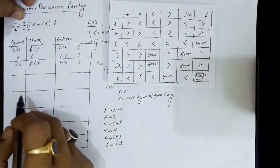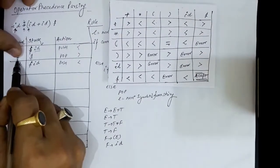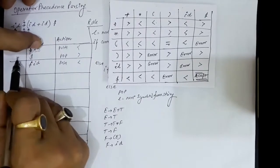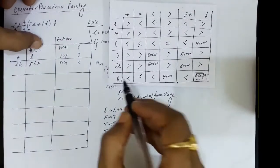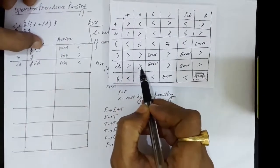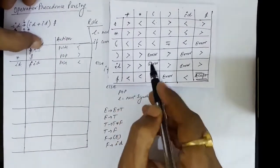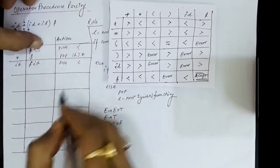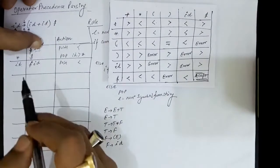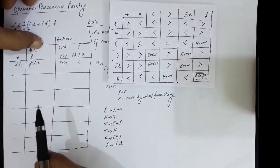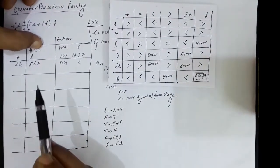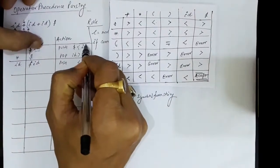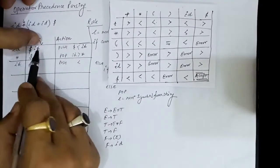Next we check the next symbol, which is the multiplication sign. We check the precedence of id over multiplication sign — id has greater precedence than the multiplication sign. In the case of greater precedence we pop from the stack, and in the case of lesser precedence we push onto the stack. So id will be popped out.